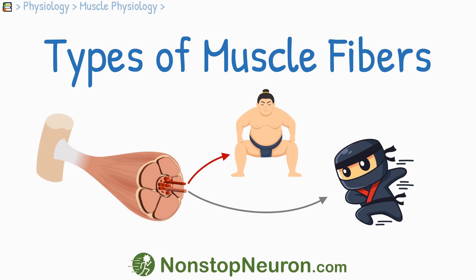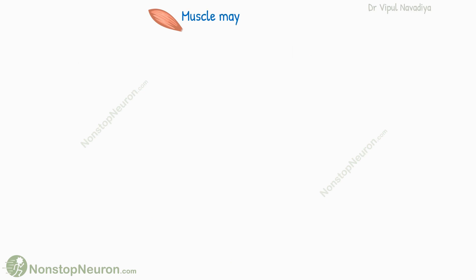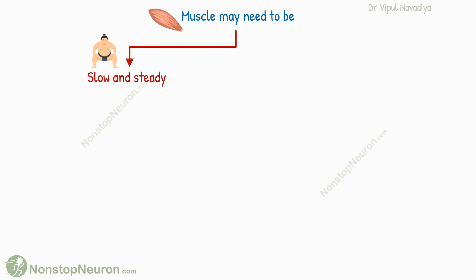In this video, we will talk about types of muscle fibers. Depending on its role in the body, the muscle may need to be slow and steady, or fast and furious.